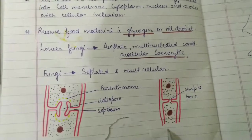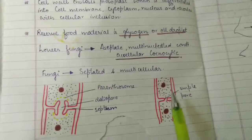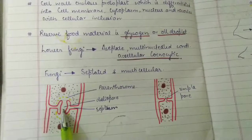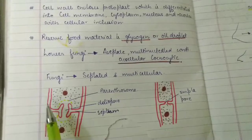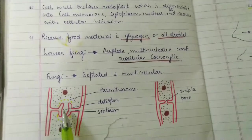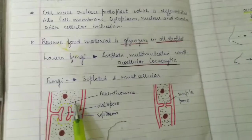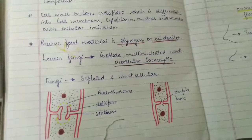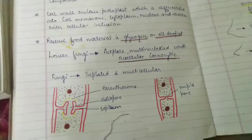Nutrition needs to pass along the mycelium — for example, a bottom cell transferring nutrients to the next cell. For this, there is the simple pore, and another pore called the dolipore. The dolipore is barrel-shaped and allows cytoplasm and nutrients to be transported from one cell to another when septa are present.